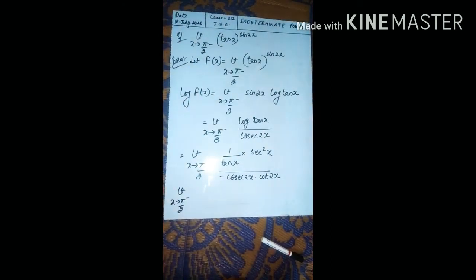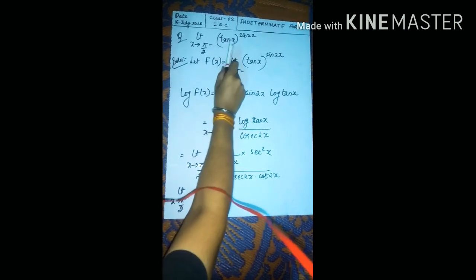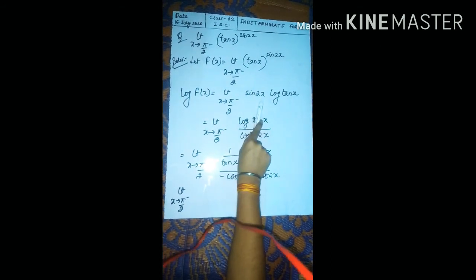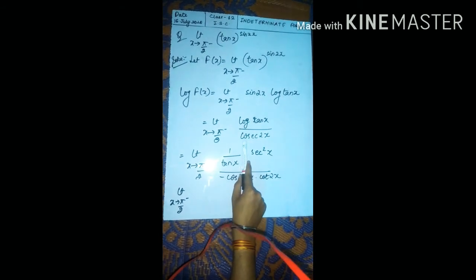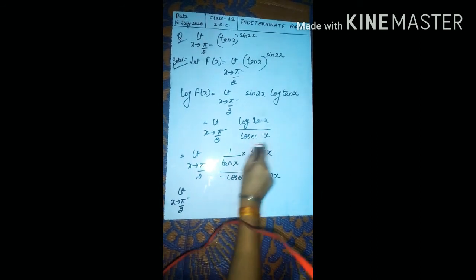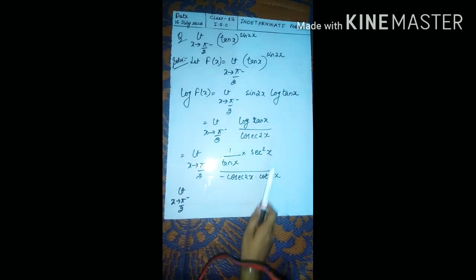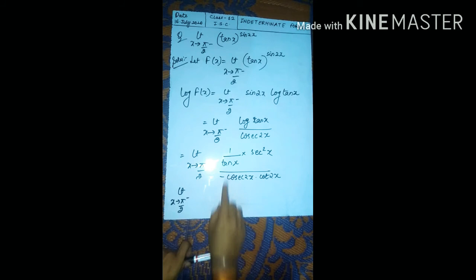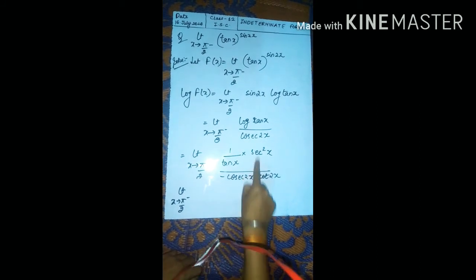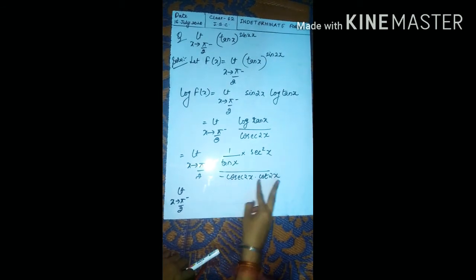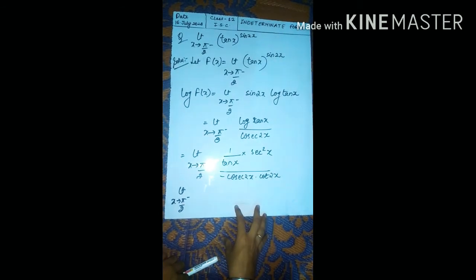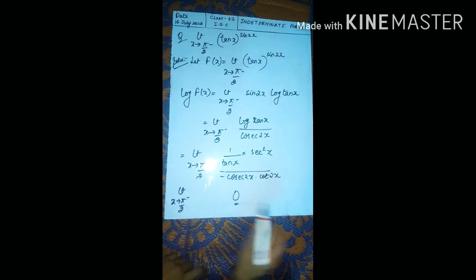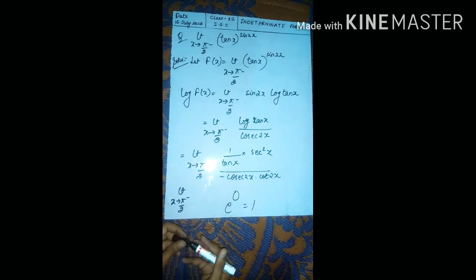Next example: limit x→π/2⁻ of (tan x)^(sin 2x). Let F(x) = (tan x)^(sin 2x). Taking log: log F(x) = sin(2x)·log(tan x) = log(tan x)/cosec(2x). Applying L'Hôpital: numerator 1/(tan x)·sec²(x), denominator -cosec(2x)·cot(2x). Simplifying the trig expressions and putting x→π/2 gives 0, so F(x) = e⁰ = 1.